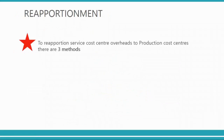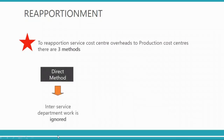To reapportion service cost centre overheads to production cost centres there are three methods. In your ACCA F2 book usually two methods are given, but technically there are three. The first method is called the direct method, where inter-service department work is ignored — service departments do not charge overhead to each other, only to production departments. The direct method is the simplest of all.